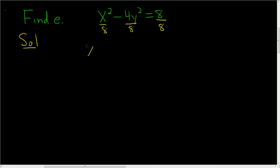And so here we end up with x squared over 8 minus y squared over 2, right? Because 4 goes into 4 once, goes into 8 twice.